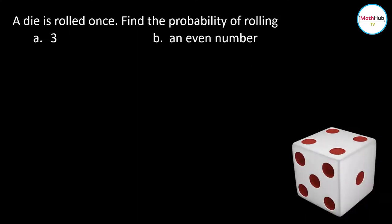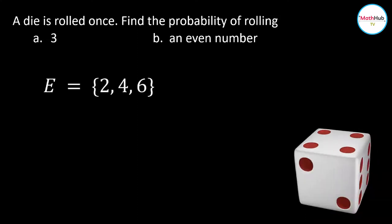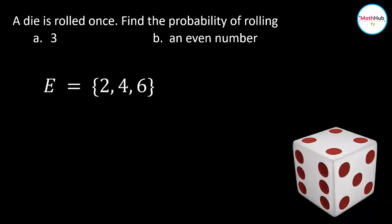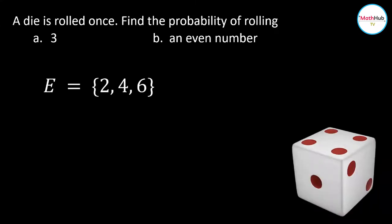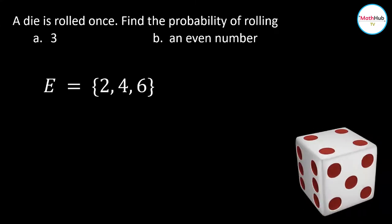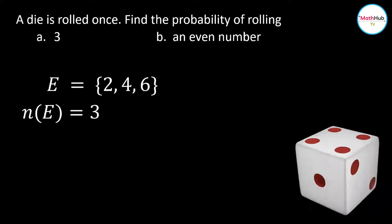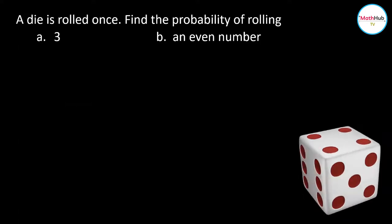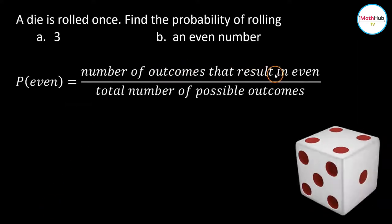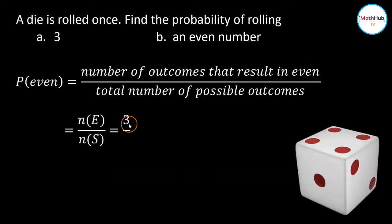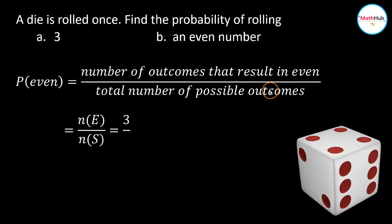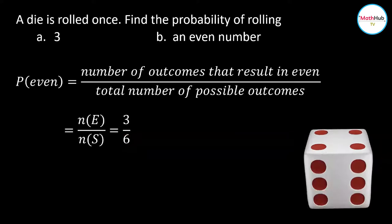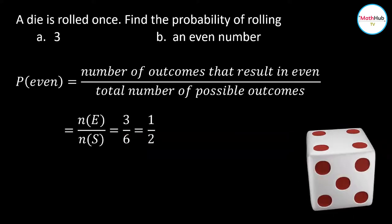For the next event, rolling an even number: this describes the event E = {2, 4, 6}. These are all the even numbers, and this event can occur in 3 ways. Therefore, N(E) = 3. So the probability of getting an even number is equal to the number of outcomes that result in an even number — that is 3 — divided by the total number of possible outcomes, which is 6. So 3 divided by 6 is equal to 1 half.